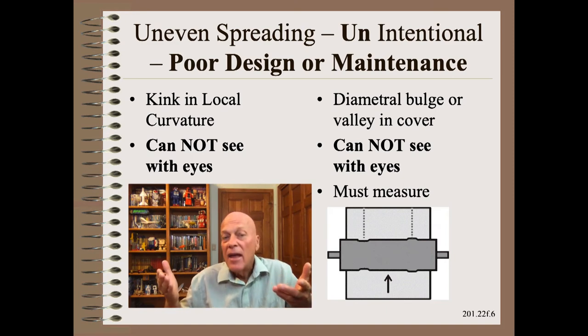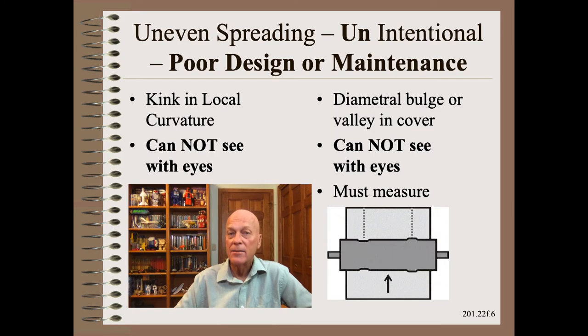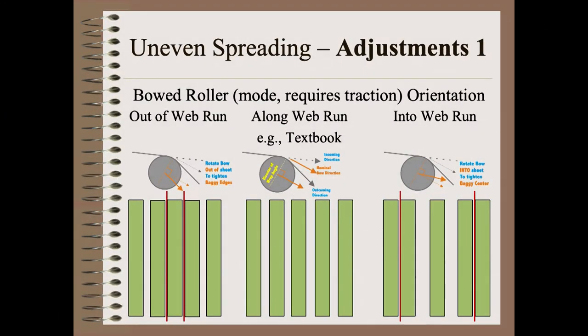We covered the mechanics of that in our award-winning Web 101 class. Most operators should know that we can, to an extent, change the amount of bowed roller spreading in the center versus the ends by small changes in bow orientation. Pointing the bow more out of the sheet will give more spreading near the edges and less in the center. Pointing the bow more into the sheet will give more spreading at the center and less at the edges. If the web is uniform and if the spreader is properly sized in design, pointing the bow near the textbook direction, as described in our Web 101 class, should result in uniform gaps.